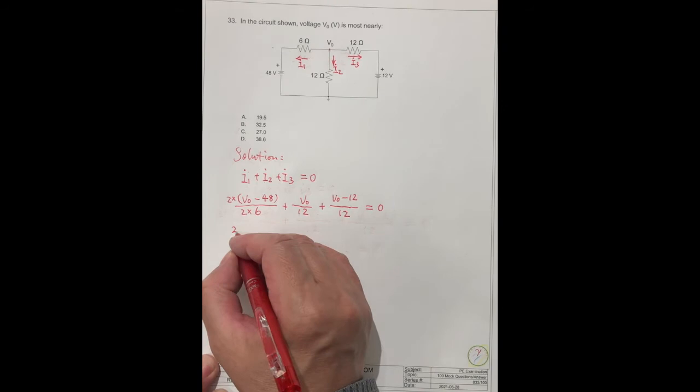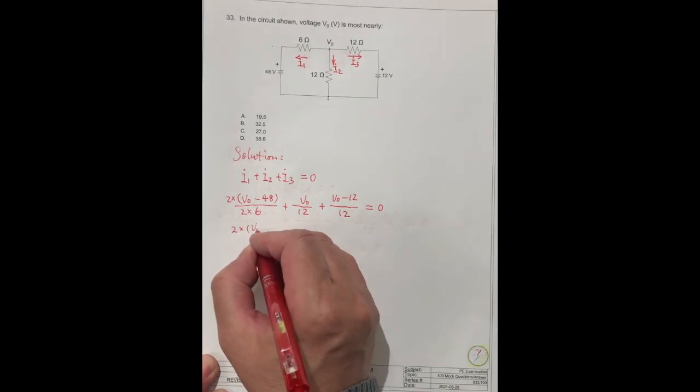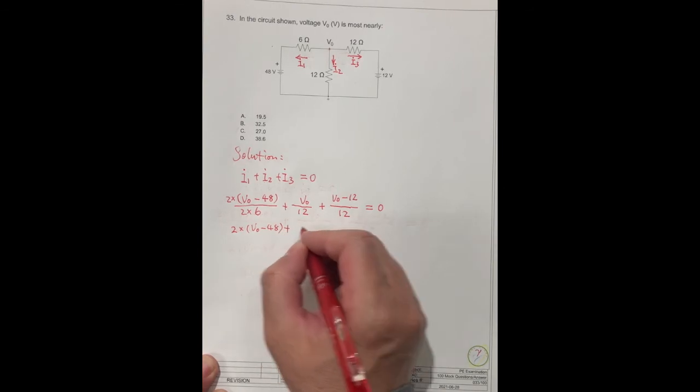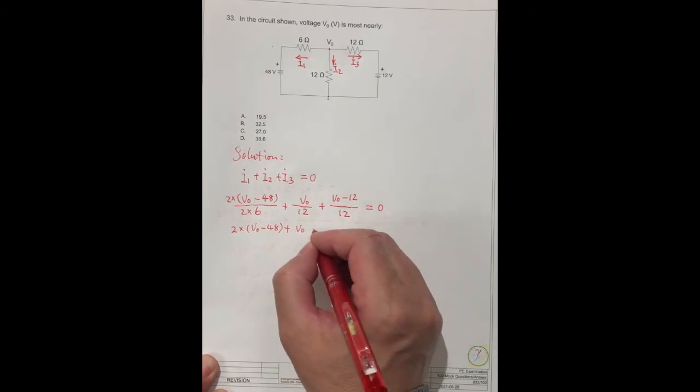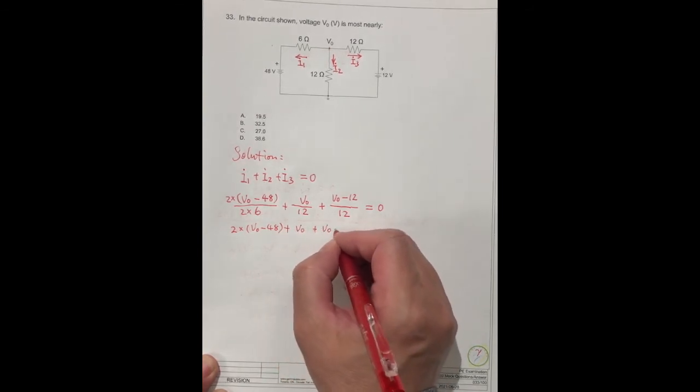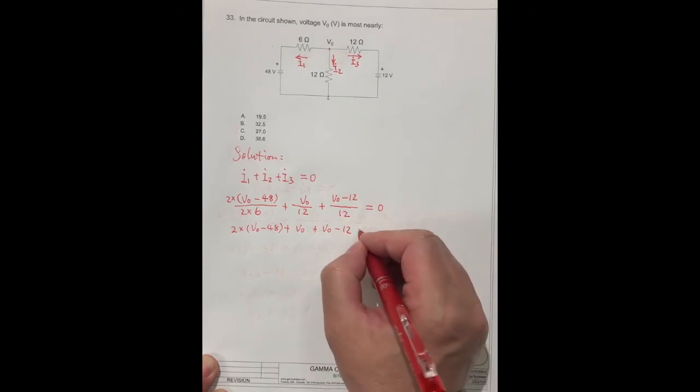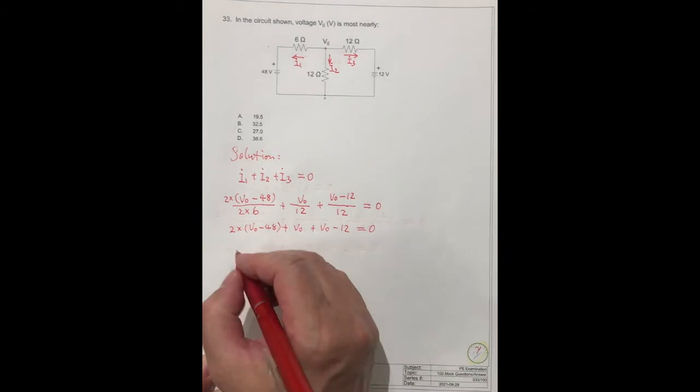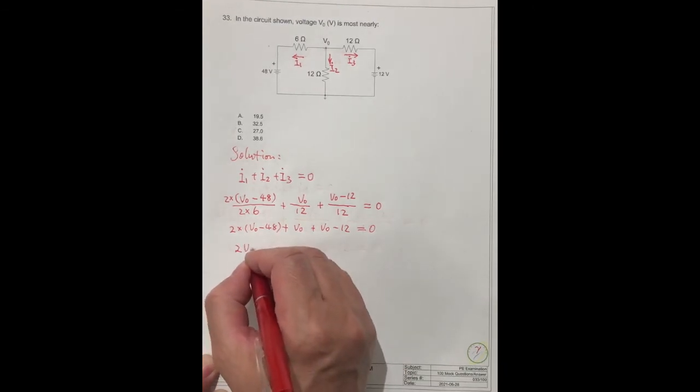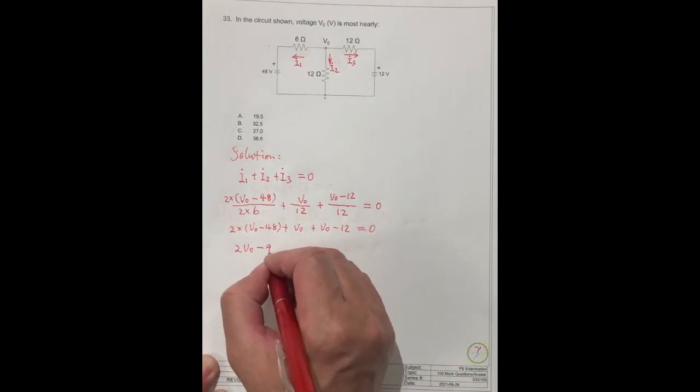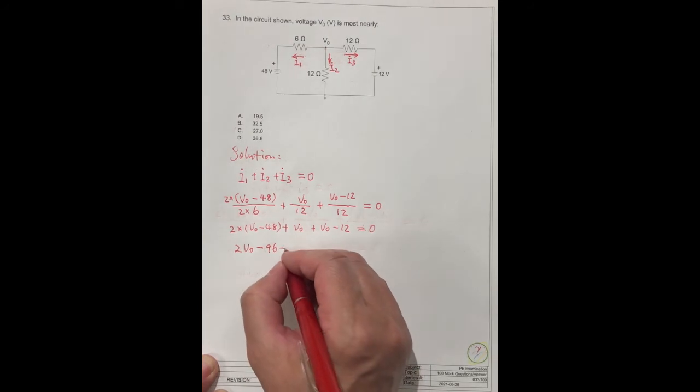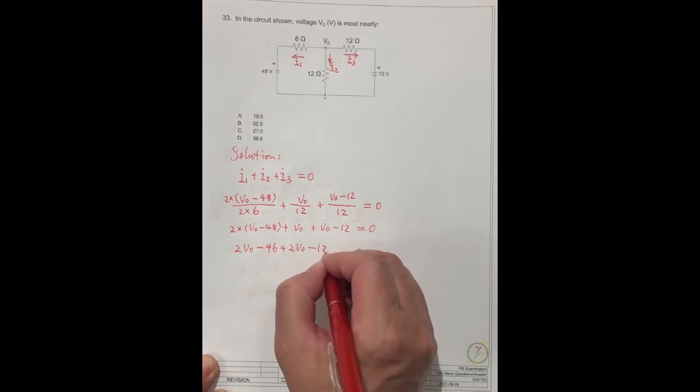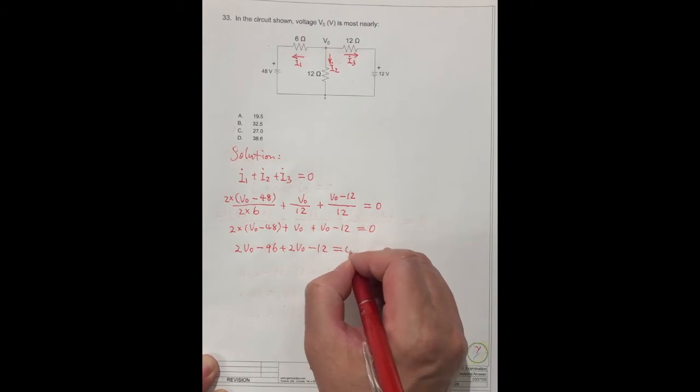So we can get 2 times V0 minus 48, plus V0, plus V0 minus 12, equals 0. So this is 2V0 minus 96, plus 2V0 minus 12, equals 0.